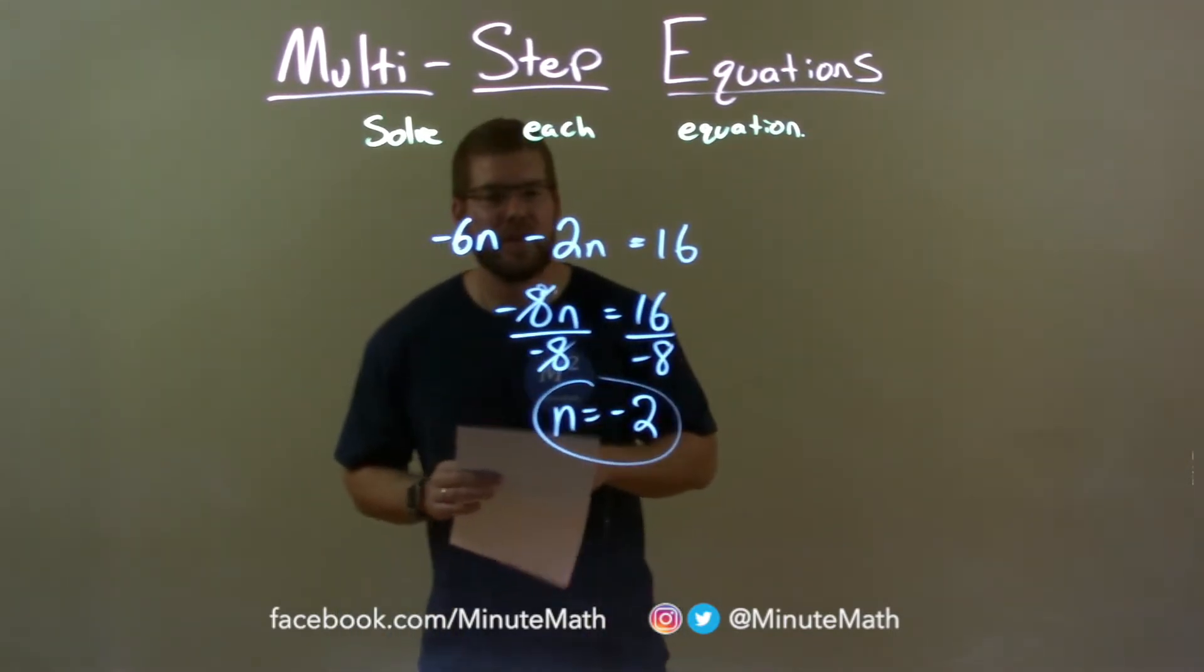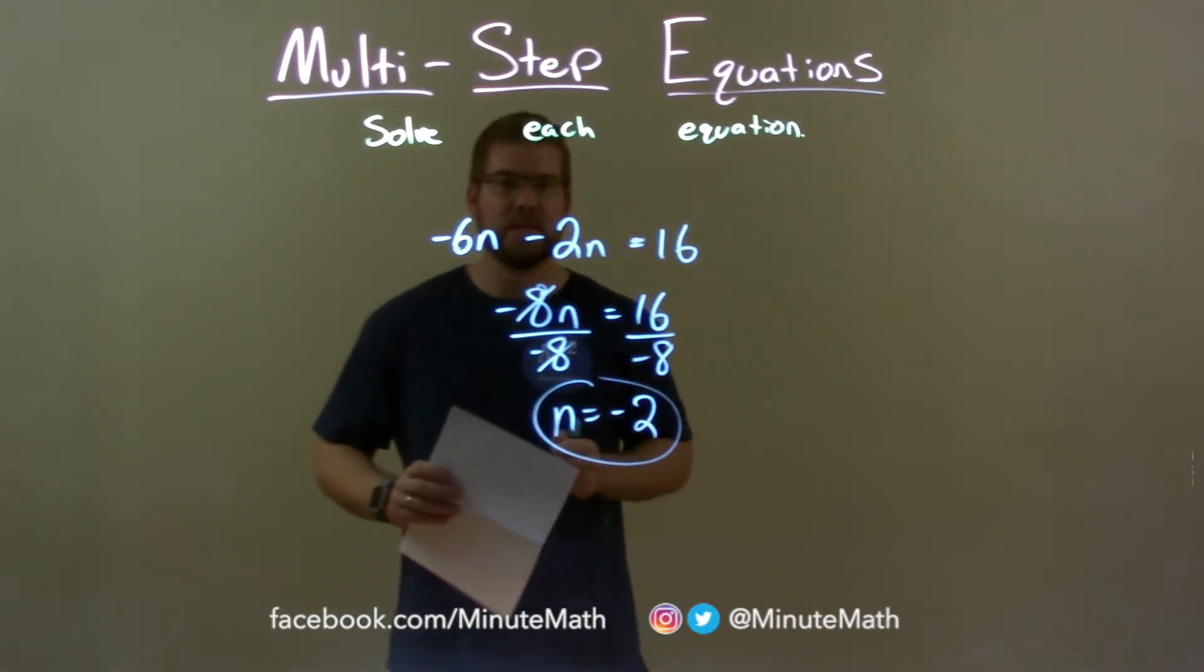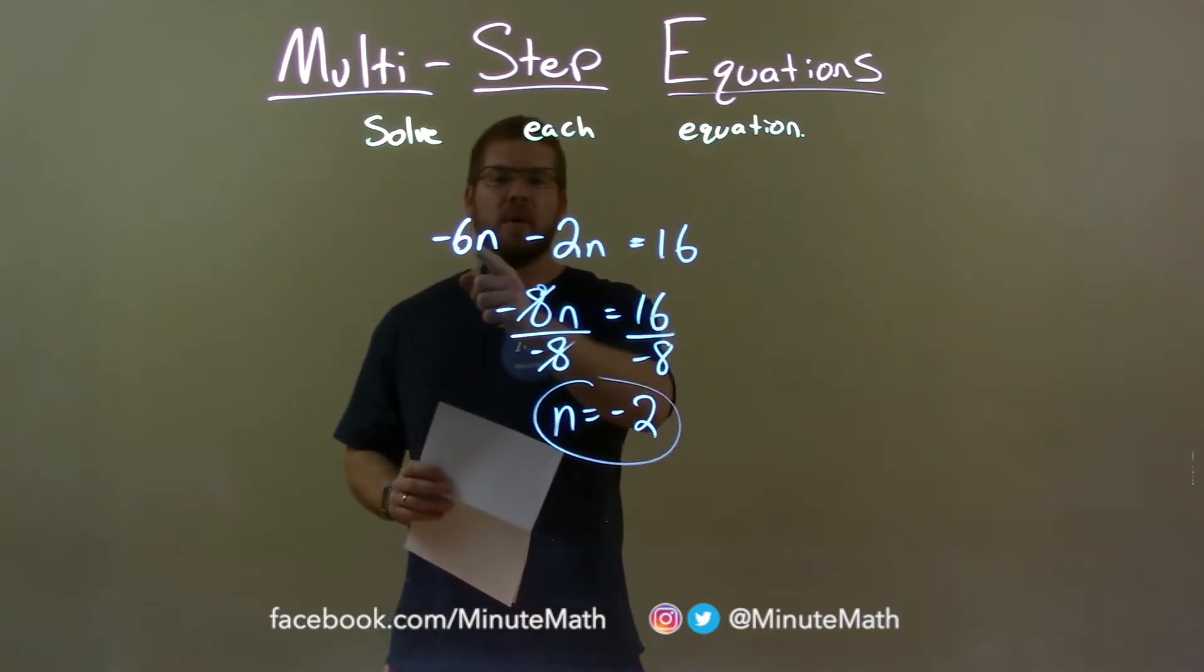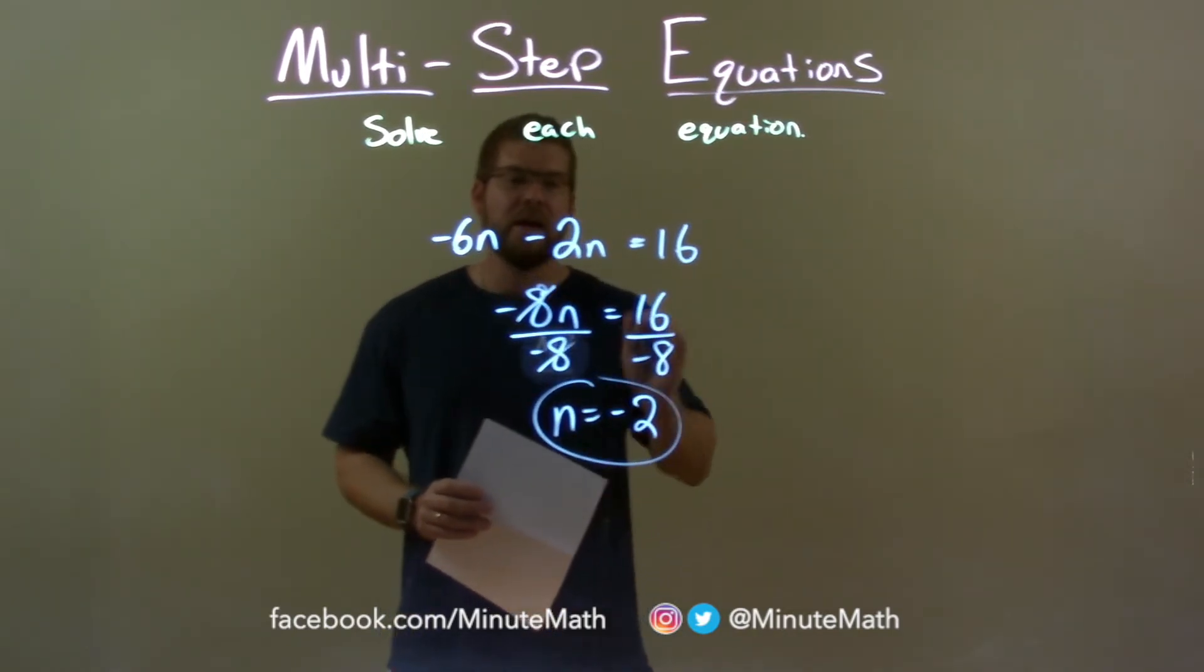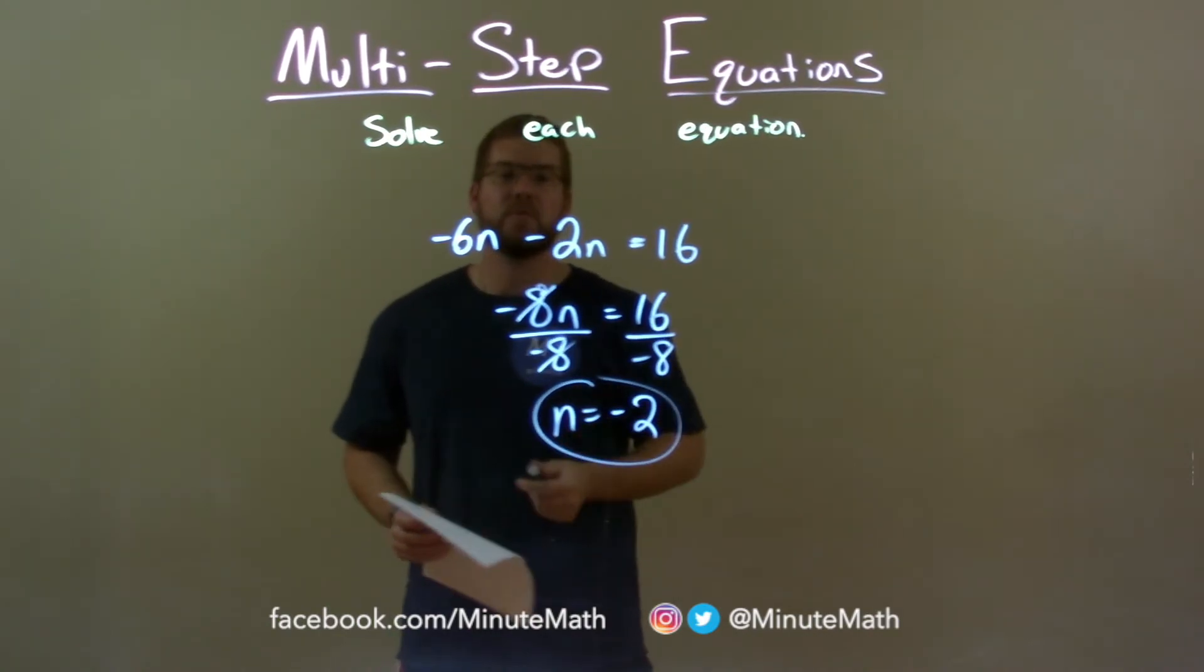Quick recap, we're given negative 6n minus 2n equals 16 and we have to solve for n. I combine our variable terms right there and then I divide both sides by negative 8. That gave me my final answer, n equals negative 2. Cool!